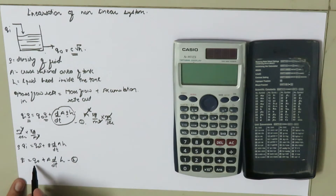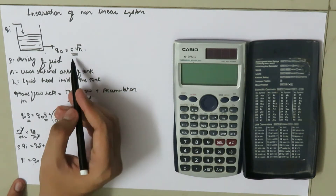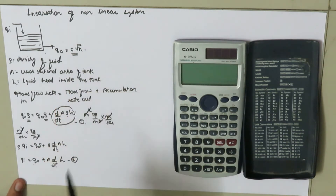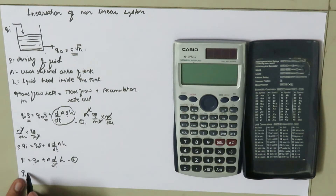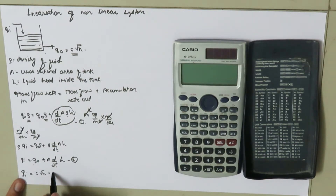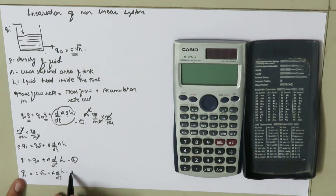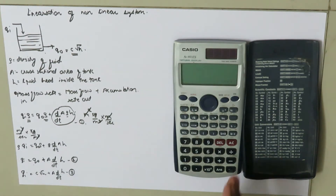Since the outlet volumetric flow rate Q_o equals C times root H, substituting gives: Q_i equals C·√H plus A·dH/dt. This is equation number three.